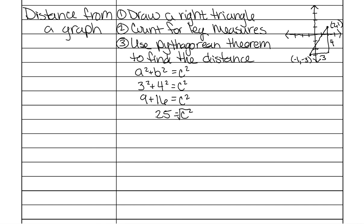To undo it, you take the square root of both sides. And the square root of 25 is five. So that means that our distance for this line is five or five units.